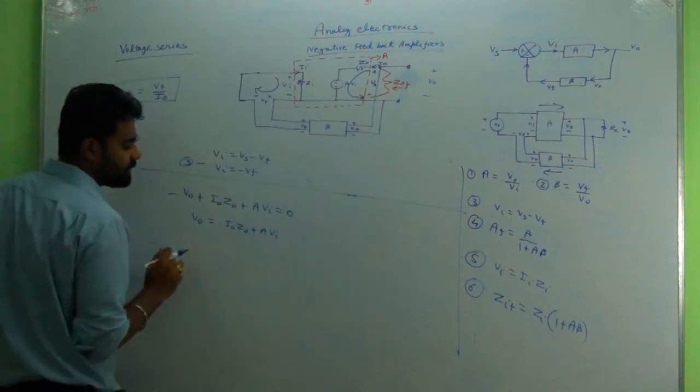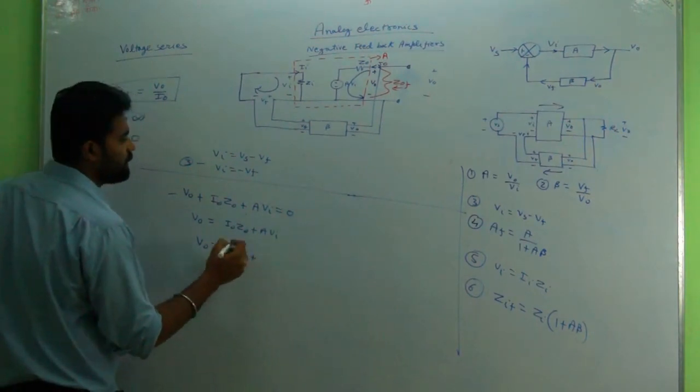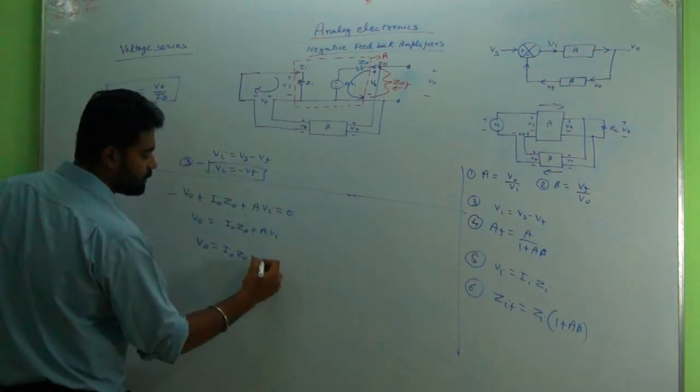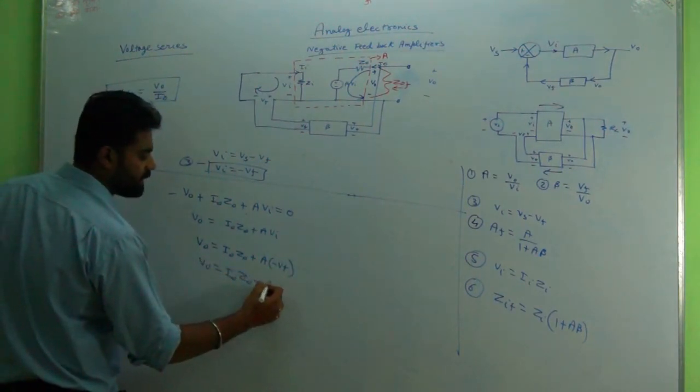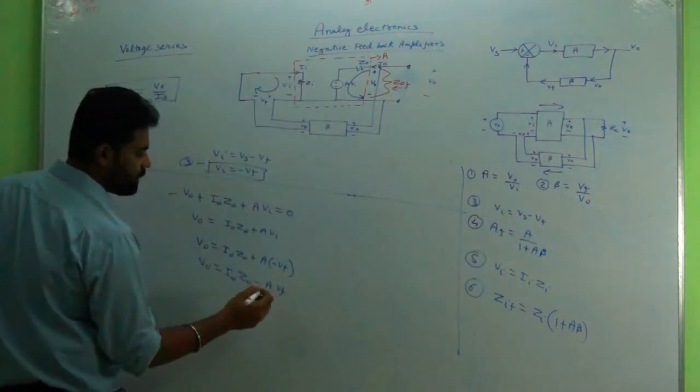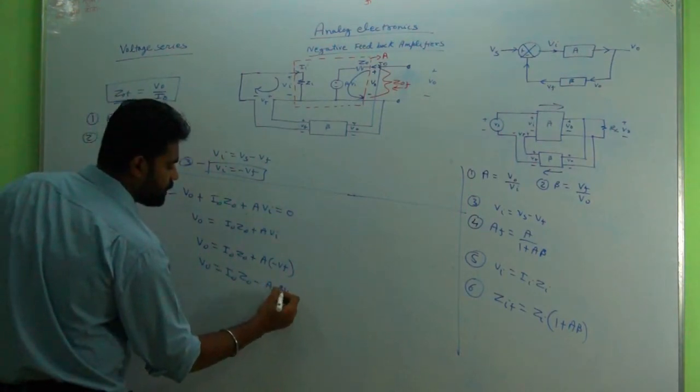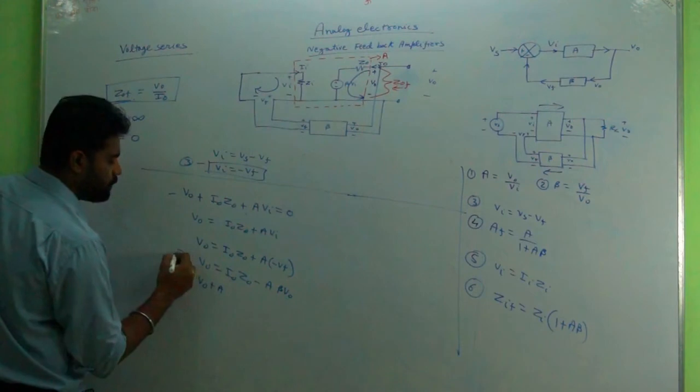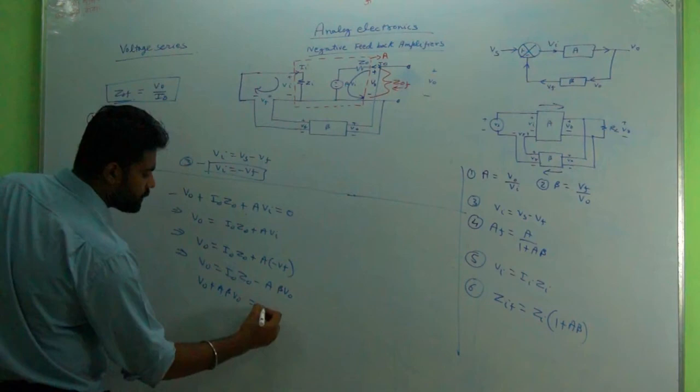That is V0 equals I0 Z0 plus Vi, which can be written as minus Vf from here, so A minus Vf. So V0 equals I0 Z0 minus AVf. Vf can be substituted from here, that is beta into V0. Thus it can be written that V0 plus A beta into V0 equals I0 into Z0.